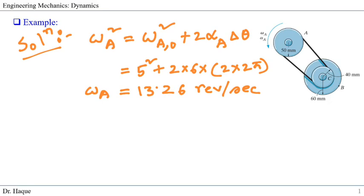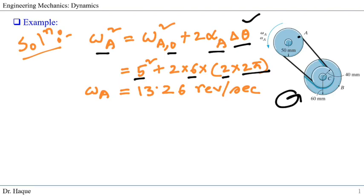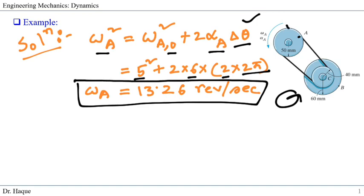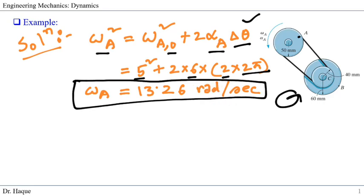First, we will find the angular velocity of pulley A after 2 revolutions. We use the kinematic equation where the final angular velocity squared equals the initial angular velocity squared plus two times angular acceleration times delta theta. Plugging in the initial angular velocity of 5, acceleration of 6, and 2 revolutions converted to radians (2 × 2π), we get the angular velocity of pulley A after 2 revolutions, which is 13.26 radians per second.